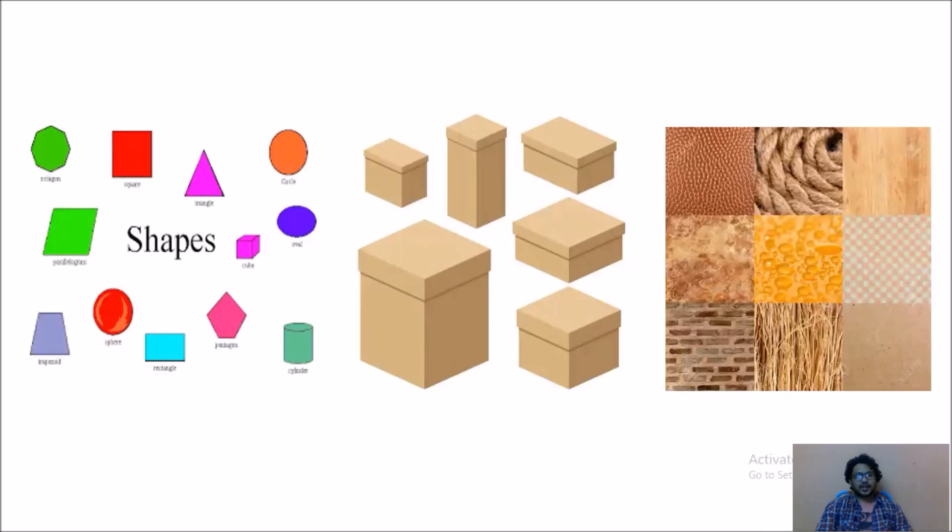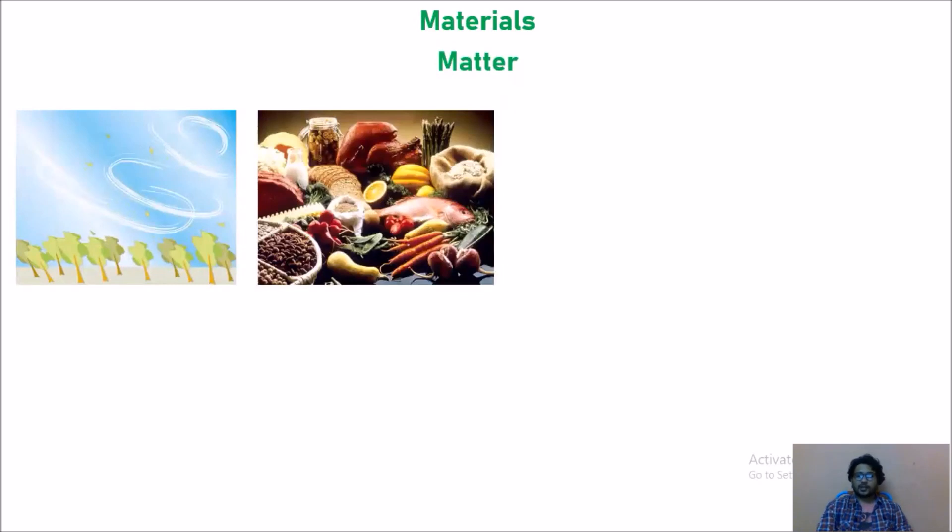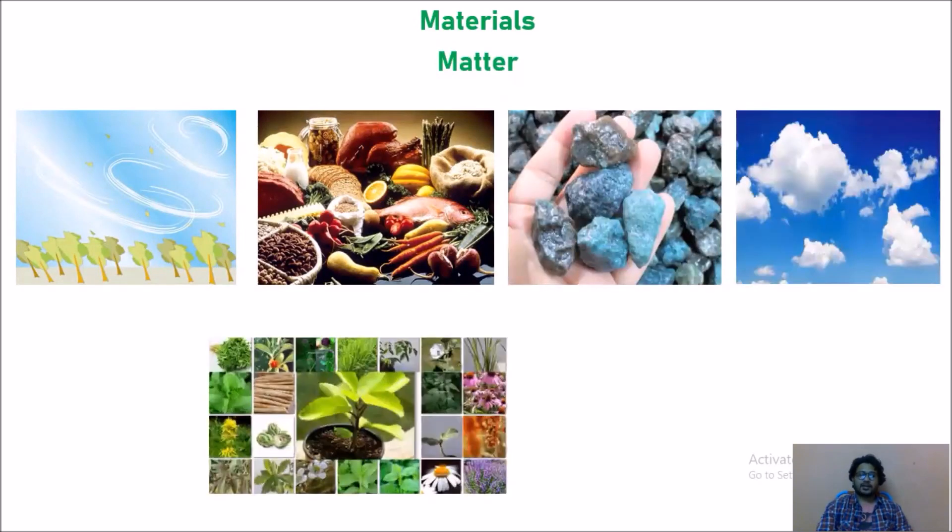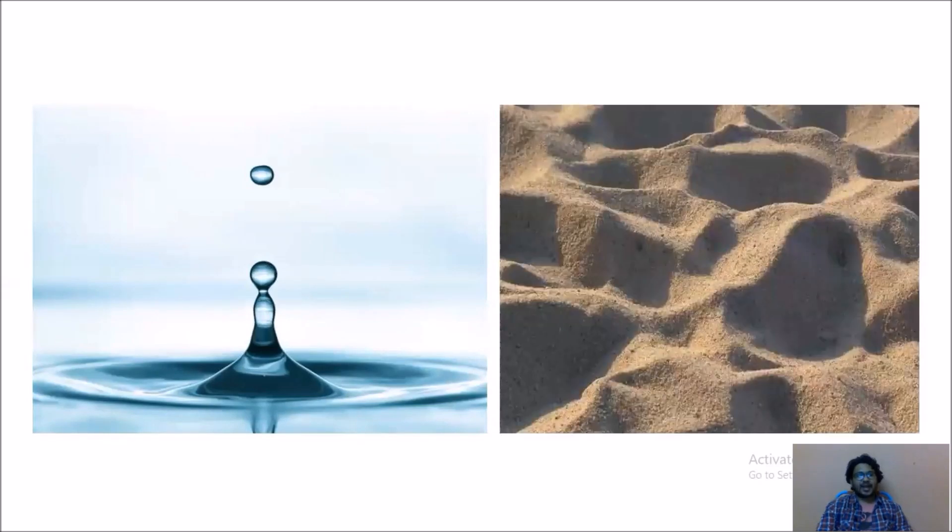As we look at our surroundings we see large variety of things with different shapes, sizes and textures. Everything in this universe is made up of material which scientists have named matter. The air we breathe, the food we eat, stones, clouds, plants and animals, even a small drop of water or particle of sand, everything is matter.